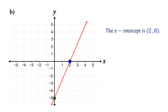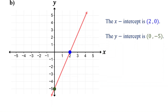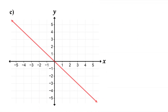To find the y-intercept, first locate where the line crosses the y-axis, then identify the coordinates of this point. Remember, the x-value at the y-intercept is 0. The y-value is negative 5. Therefore, the y-intercept is the point (0, -5). What if the line passes through the origin?